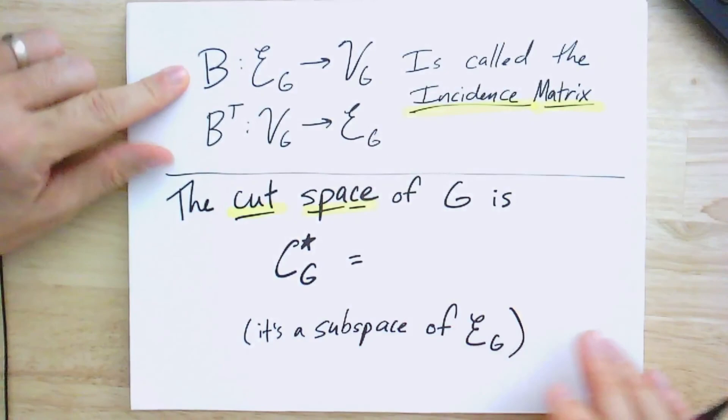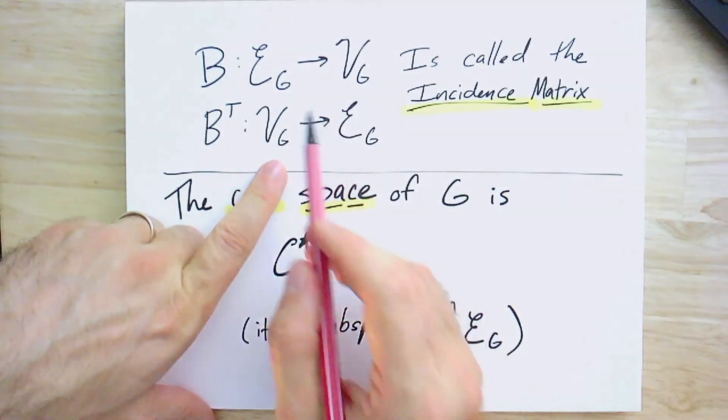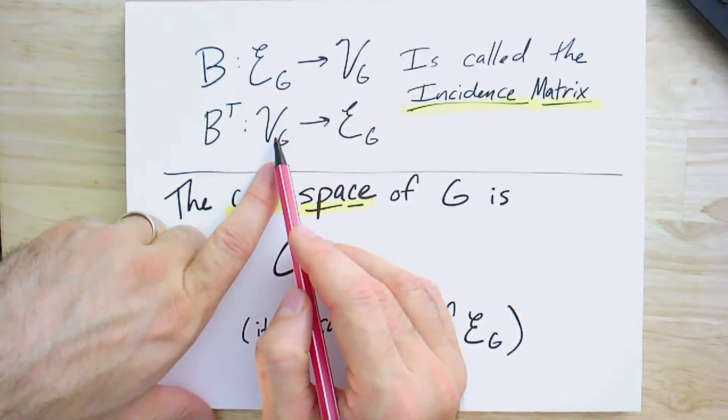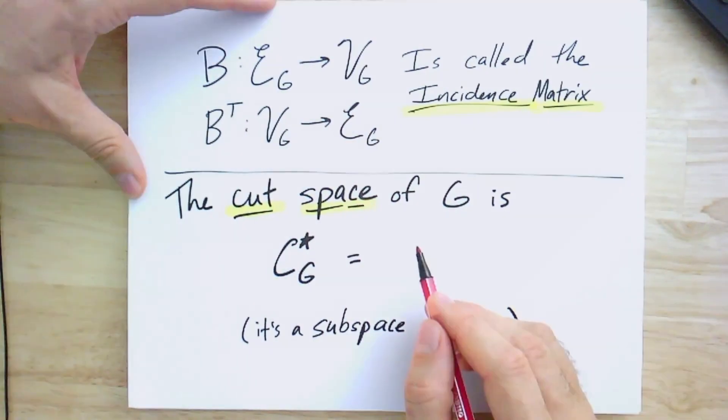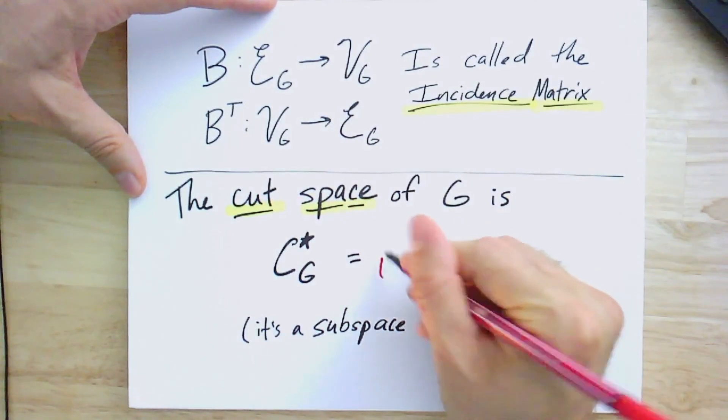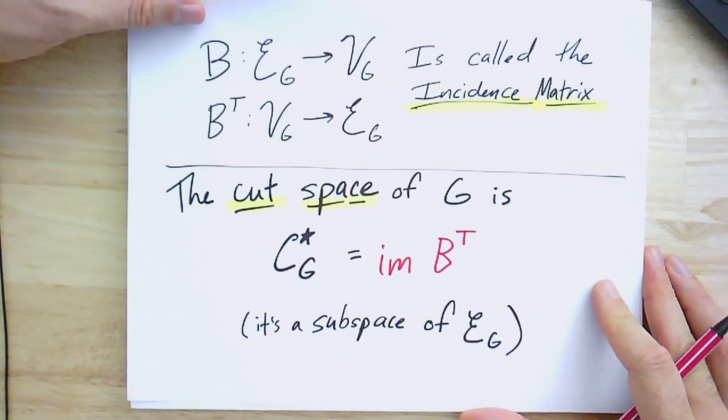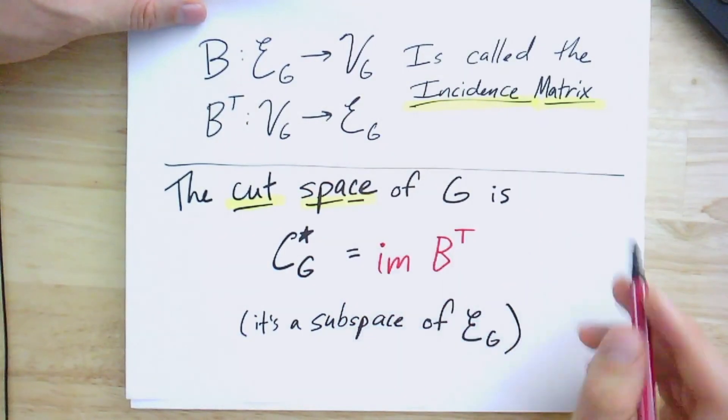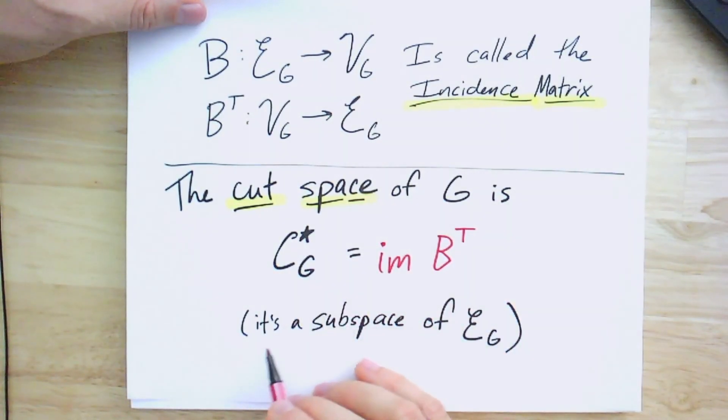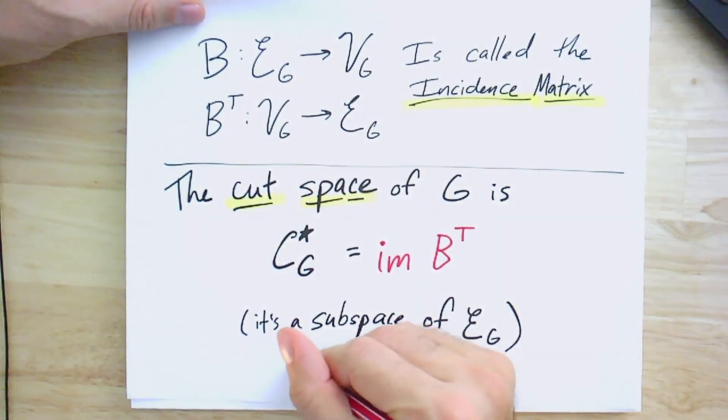So what do we have? This matrix B, as I mentioned, it's called the incidence matrix. And B transpose can be thought of, now this is a linear transformation from vertex space to edge space and B goes the other way. It turns out that because we showed that this cut operation is linear, we get something called the cut space, which is just the image of B transpose. And so any cut that we could have gotten is going to be in here. And this is a linear subspace of the edge space. And this is a standard way to define a subspace is to just take a linear map and look at its image.